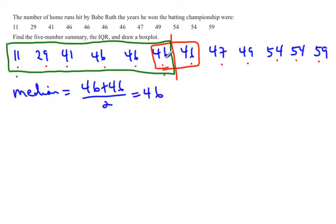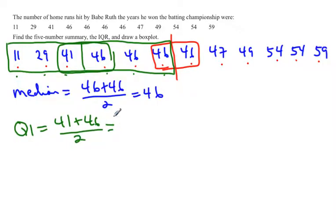You use this 46 because the median is actually above that 46, it's in between those two, so this 46 is actually below the median. So we will use that one, and then again we go to the center. So my lower quartile or Q1 is between these two numbers. So Q1 would be 41 plus 46 divided by 2, which happens to equal 43.5.